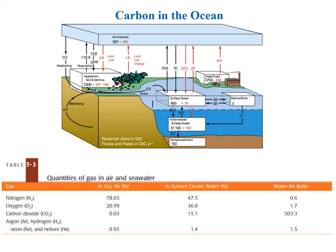We're going to talk about carbon now. Carbon in the ocean is really important because the carbon dioxide in the atmosphere is responsible for the greenhouse effect, both the natural and the anthropogenic greenhouse effect. So if the concentration of carbon in the ocean affects the atmospheric concentration, that will then affect climate.